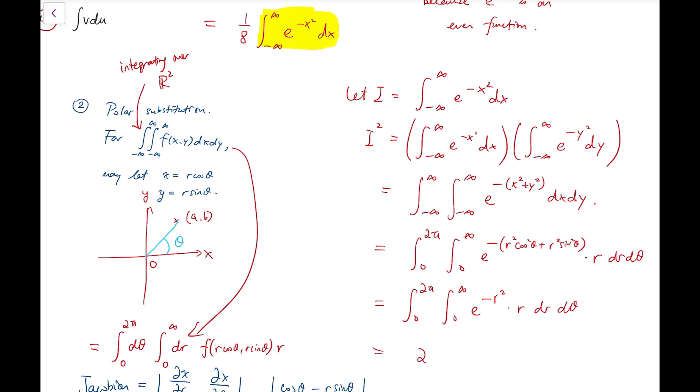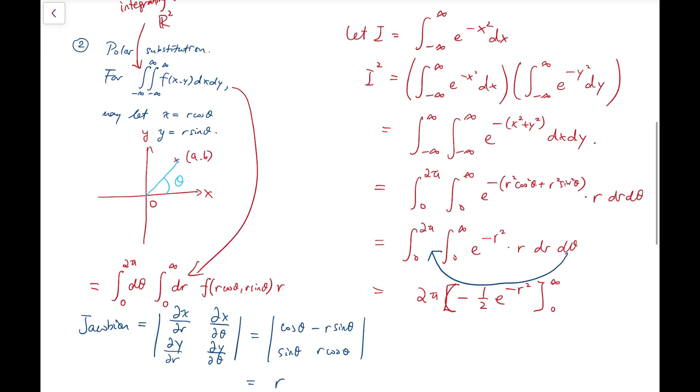So it becomes 2 pi, which comes from d theta. I can move this over here and get the theta settled, and it will become just 2 pi, multiply by minus a half of e to the minus r squared with upper limits and lower limits. And what's left would be exactly 2 pi times 0 minus negative a half, and that is pi.